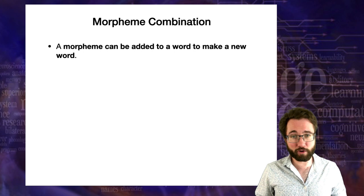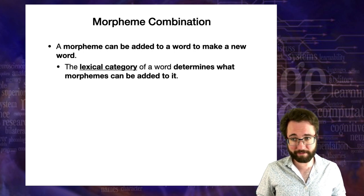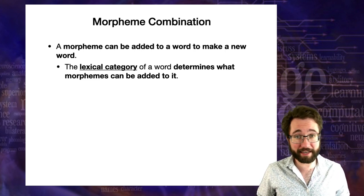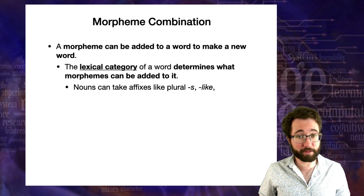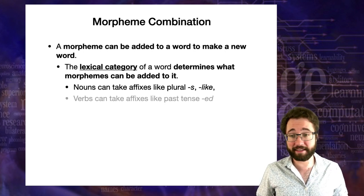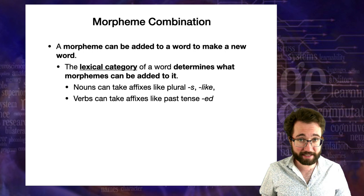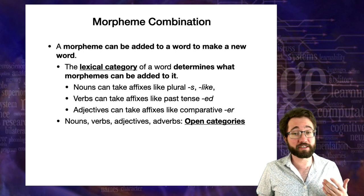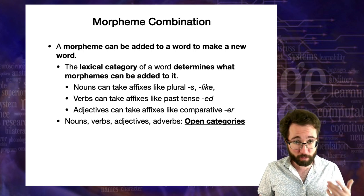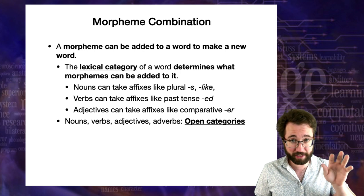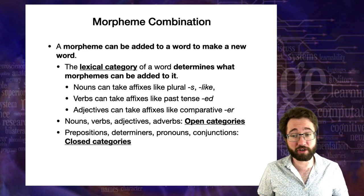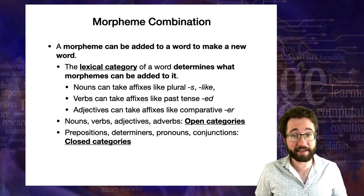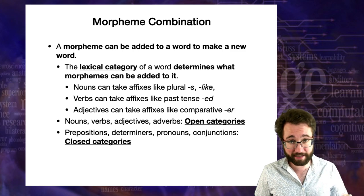A morpheme can be added to a word to make a new word, and the lexical category of a word determines what morphemes can be added. Nouns can take plural morphemes like 's'. Verbs can take tense-related morphology. Adjectives can take comparative morphology. Nouns, verbs, adjectives, and adverbs form open categories, meaning it's easy to form new words within them. Prepositions, determiners, pronouns, and conjunctions are closed categories, meaning it's hard or impossible to form a new word within them.